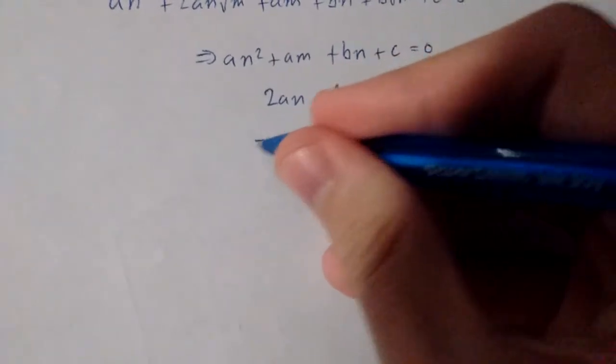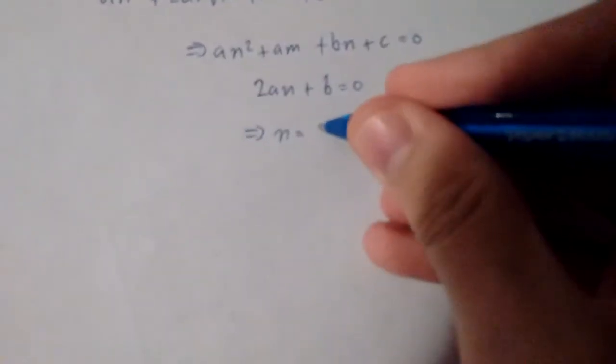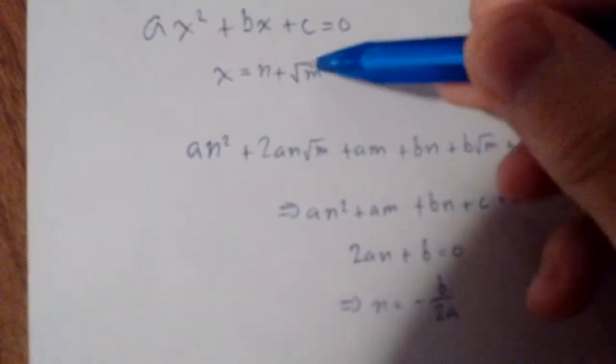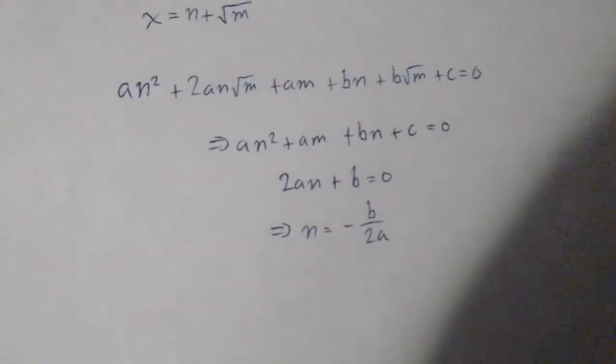We can immediately solve the second one and get n equals minus b over 2 a, which is the first part of the quadratic formula if you look at it. So it's working out.